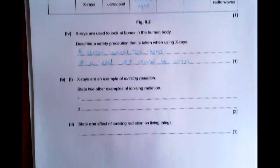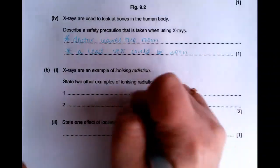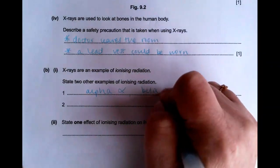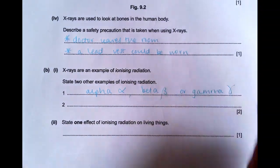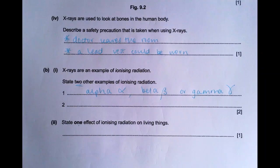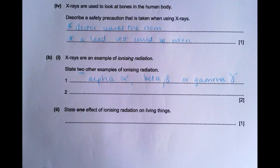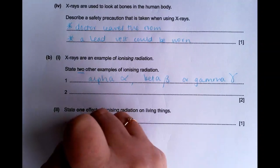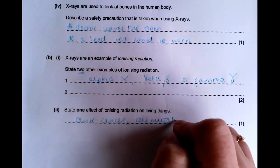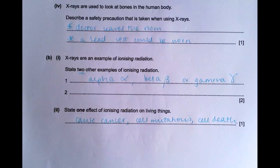So the next question is to state two other examples of ionising radiation. So you could have chosen any two from alpha, it would have been OK if you did this symbol, beta or gamma. Obviously only choose two. If they specify the number of things you have to give, only ever give that amount. I'm just giving you all of the options so that you know whether you've got yours right or wrong. State one effect of ionising radiation on living things. So it can cause cancer, it can cause cell mutations, it can cause cell death. You could have chosen those options there. So it's to do with the cells and the impact that that has.